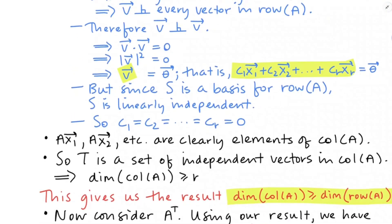So T is a set of independent vectors that are all living in the column space of A, which means that the dimension of the column space is at least R, since there are R vectors in T. This gives us the result that in general the dimension of the column space of a matrix is greater than or equal to the dimension of the row space.